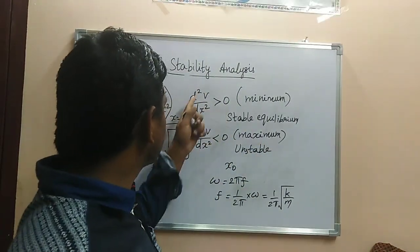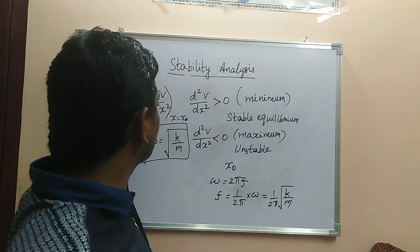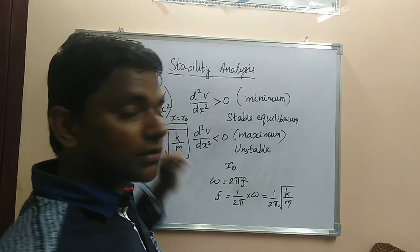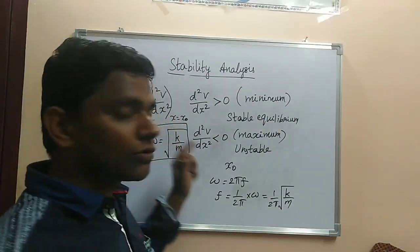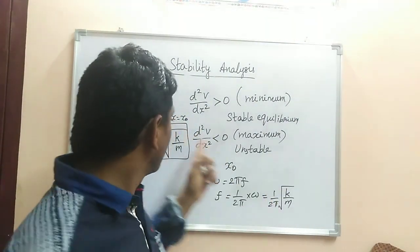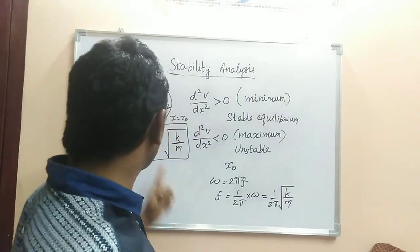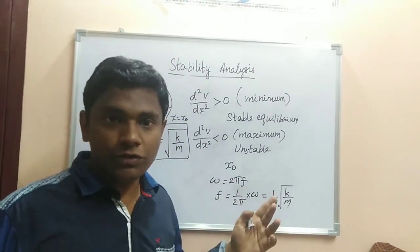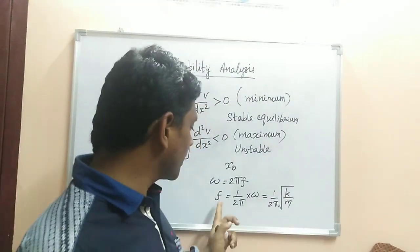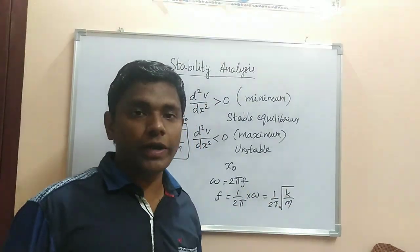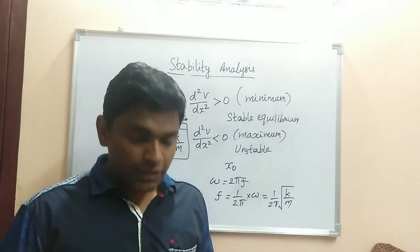Using the second derivative evaluated at x₀, you find the force constant k = d²V/dx²|_{x=x₀}. Then calculate the angular frequency of oscillations using ω = √(k/m), or the frequency using f = (1/2π)√(k/m), where m is the mass of the body.